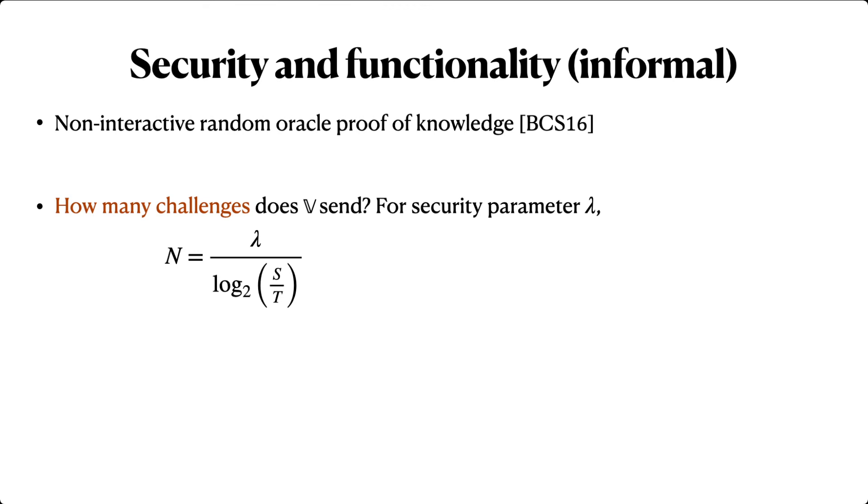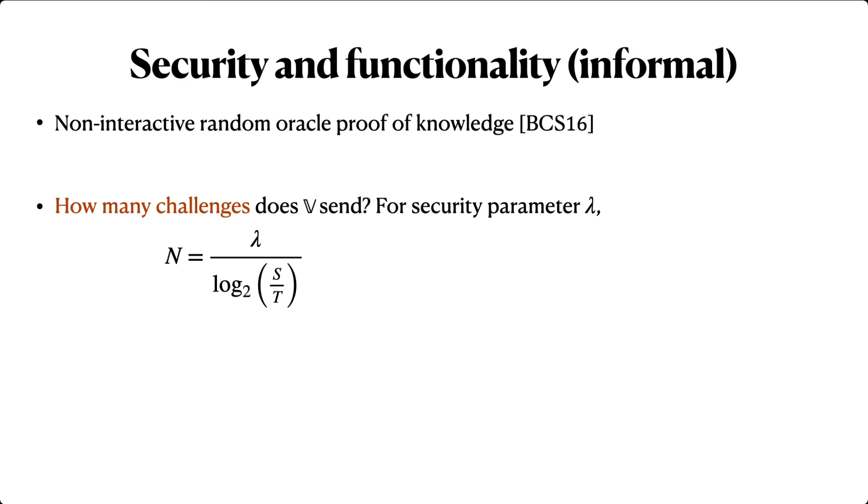More specifically, we show that for lambda-bit security, the number of queries is proportional to lambda and inversely proportional to the log of the ratio between the total signed weight and the verifier's target weight. Interestingly, this means that the more signatures the prover knows, the shorter a certificate it can create. We'll see the effect of this concretely in just a moment.